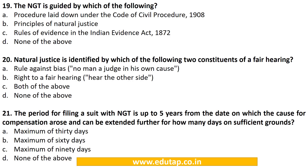MCQ 19: The NGT is guided by which of the following? A. Procedure laid down under the Code of Civil Procedure 1908, B. Principles of Natural Justice, C. Rules of Evidence in the Indian Evidence Act 1872, D. None of the above. The correct answer is B. Principles of Natural Justice. MCQ 20: Natural Justice is identified by which of the following two constituents of a fair hearing? A. Rule against bias — no man a judge in his own cause, B. Right to a fair hearing — hear the other side, C. Both of the above, D. None of the above. The correct answer is C. Both of the above.